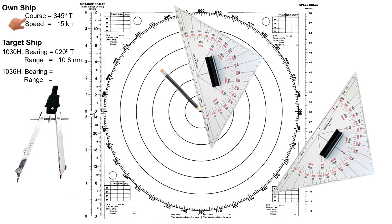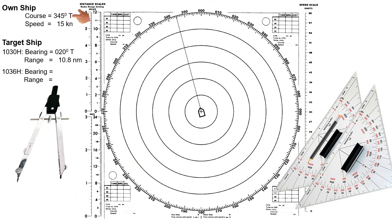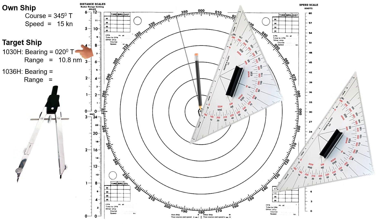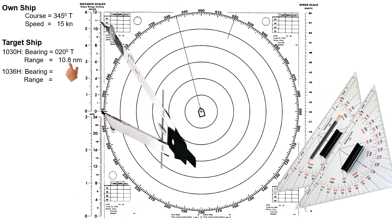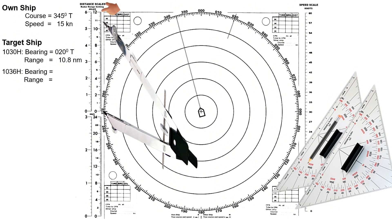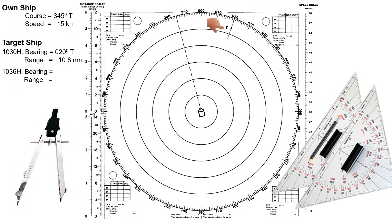Let's begin by plotting the own ship's course, which is 3-4-5 degrees true. From a bird's eye view, this is what the own ship looks like, with the ship's bow pointing in this direction. Plot the target's bearing at 0-2-0 degrees and draw a very light line between the 10–12 mile range, as the target's distance is 10.8 miles. Use your compass divider to measure 10.8 miles on the 12-mile range scale, then lay this measurement down from own ship's position along the 0-2-0 degree bearing line and mark the point. Label this point with a small letter R, to represent the first plotted position of the target ship. We will erase the bearing line to keep the plotting sheet neat. This is now the target's position relative to own ship at 1030 hours.